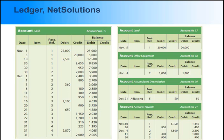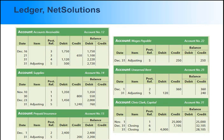Here is the ledger activity for Net Solutions: cash, land, office equipment, accumulated depreciation accounts, and accounts payable. Net Solutions ledger activity is continued with accounts receivable, supplies, prepaid insurance, wages payable, unearned rent, and Chris Clark capital accounts.